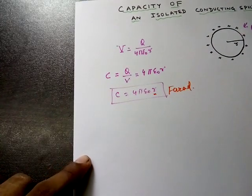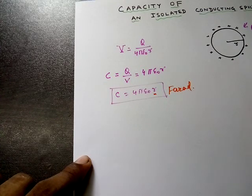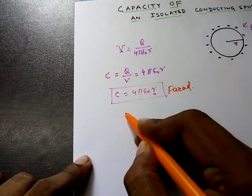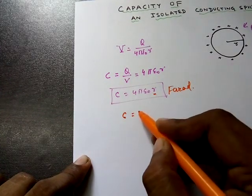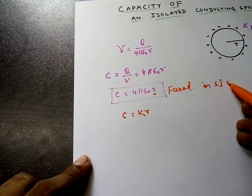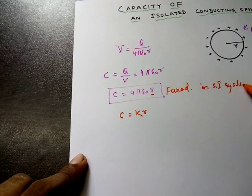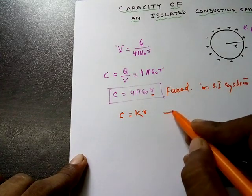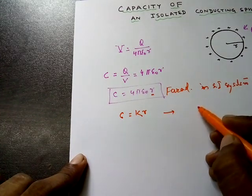If I am to find out the value in CGS system, C will be just equal to KR. This is in SI system, and this will be in CGS system.